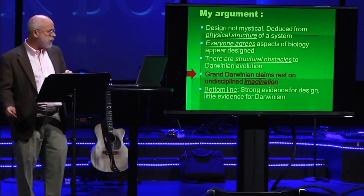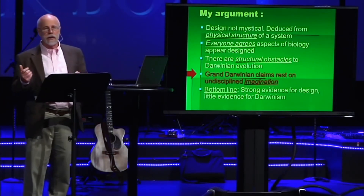The point is that there are structural obstacles — physical reasons to think that Darwin's theory really can't do what its proponents claim for it. In our everyday life we hear it claimed repeatedly in the media that Darwin's theory has been shown by science to explain everything in life. But those grand Darwinian claims rest on undisciplined imagination. Imagination is a good thing in science, but if it's undisciplined, if it's too far removed from the data, then it can become misleading.